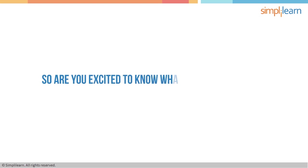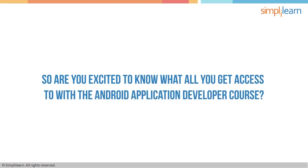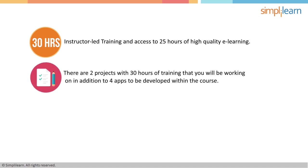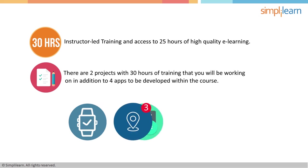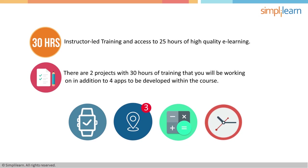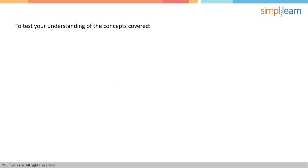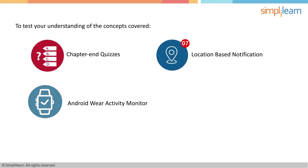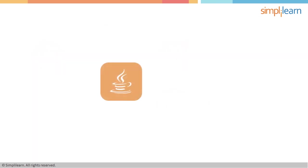So are you excited to know what you get with the Android application developer course? There are a host of features: 30 hours of instructor-led training and access to 25 hours of high-quality e-learning. There are two projects with 30 hours of training, four apps to be developed within the course, and on-demand support for any queries. Chapter quizzes are included to test your understanding. You will also learn how to develop popular apps like a Location-based Notification App and Android Wear Activity Monitor App. We also provide a downloadable e-book, and you get the Java Essentials course within the Android course for free.